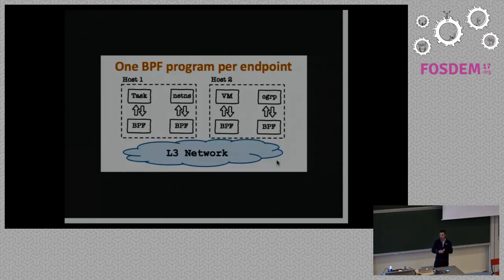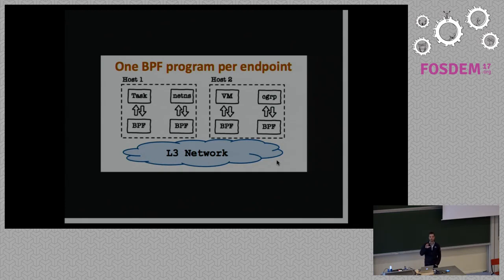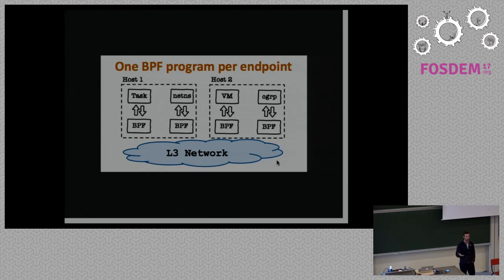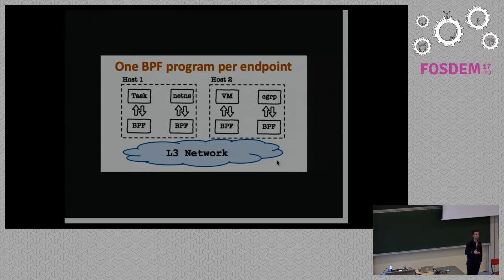This shows the one BPF program per endpoint visualization. The key element is it's not a single BPF program — it's one BPF program per endpoint, meaning the program only contains what is essentially required for that endpoint. For example, if an endpoint will only ever talk IPv4, we will not compile in any IPv6 support. If an endpoint requires port mapping — say a service running on port 8080 wants to expose itself on port 80 — we compile in the port translation instructions. If not needed, we omit it. If we require policy enforcement, we compile it in; if not, we compile it out. Instead of a configurable pipeline, we have a programmable pipeline that always contains only the minimal amount of code required.